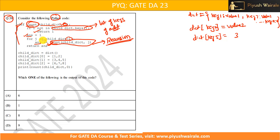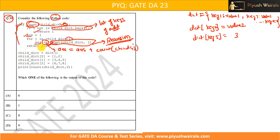I hope you know what plus-equals means. This means I can write this particular expression like this: ans = ans + count(child_dictionary, j). Here plus-equals means ans will be updated with ans plus count. And then we are returning this particular variable ans. So this is what this particular function is doing.